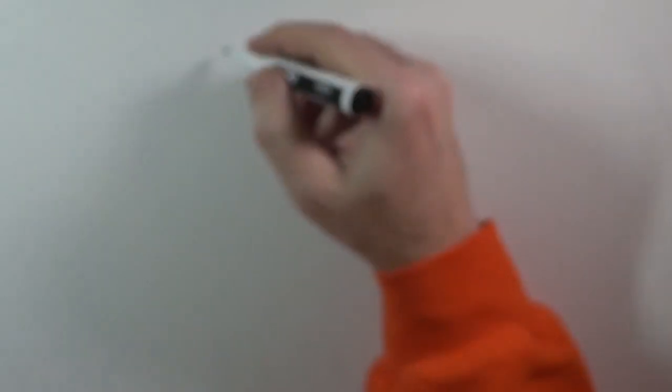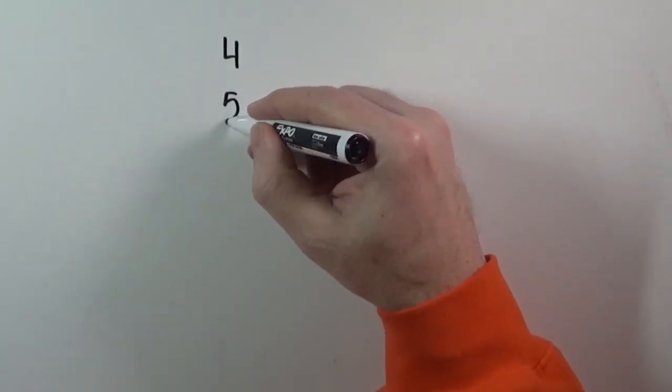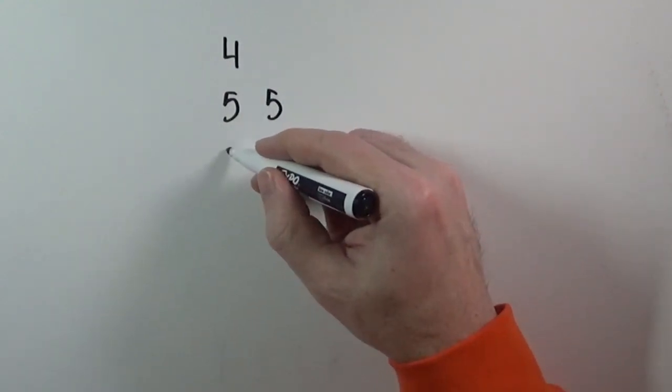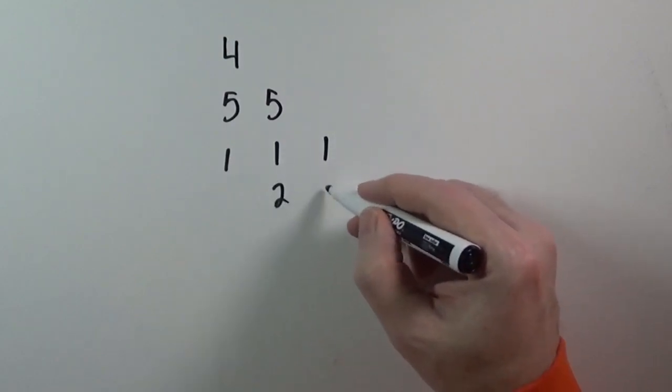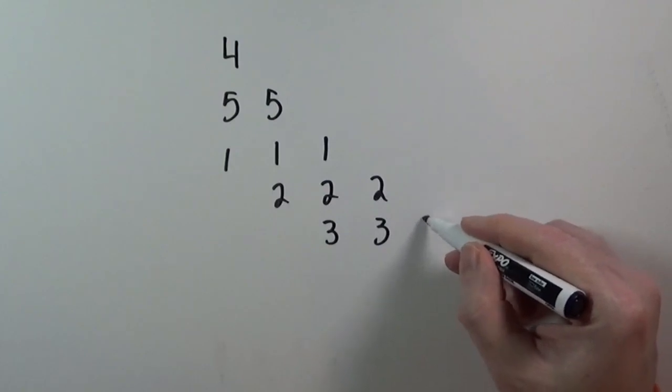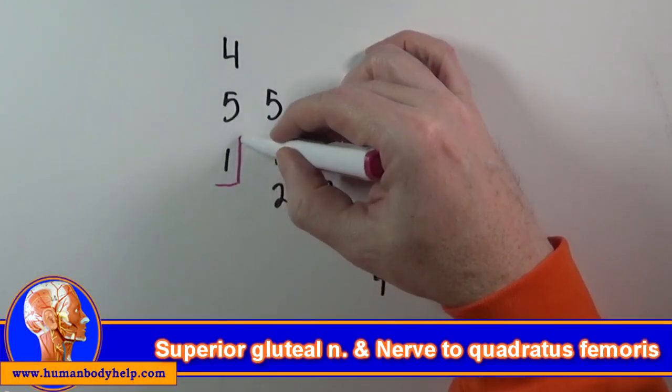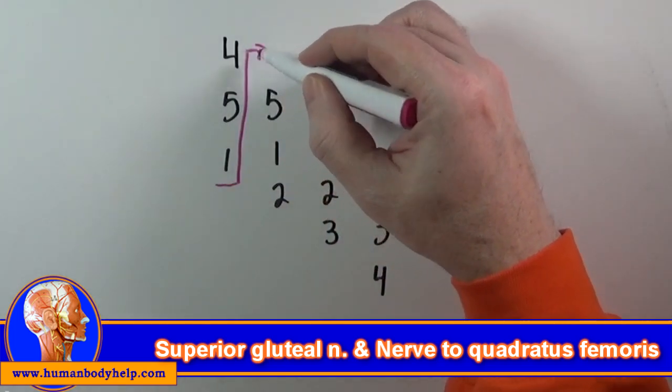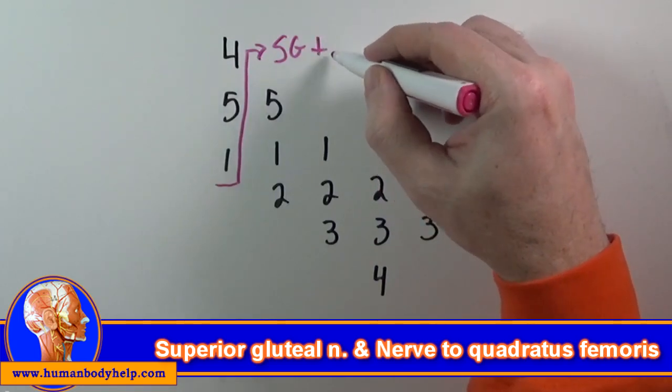We start by drawing a series of numbers in rows. A 4 in the first row to represent L4. In the second row, we draw two 5s for L5. The remaining rows are sacral levels, so we draw three 1s in the third row. Then skip a column and draw three 2s. Skip again and draw three 3s. Finally, we'll skip a column and end with a 4 in the last row. Now these numbers are already organized into groups if we draw them like this. The first group, L4, L5, and S1, are the levels that contribute to both the superior gluteal nerve and the nerve to quadratus femoris.